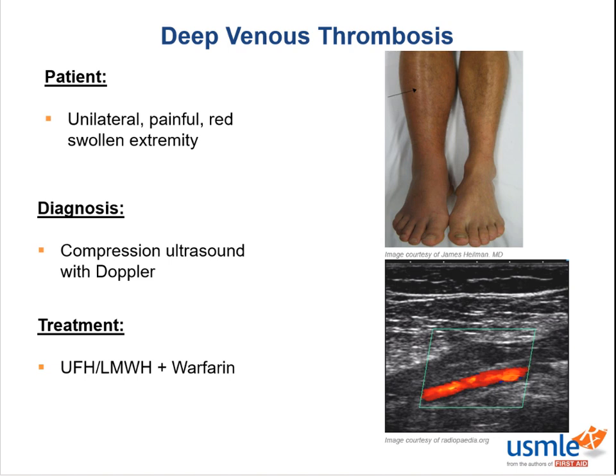Okay, but why do we need to treat DVT anyway? Well, sure, it can rarely be limb-threatening, but the main reason is because DVTs can cause life-threatening pulmonary emboli. The risk factors for PE and DVT are essentially the same, so you often hear them clumped together as venous thromboembolism, or VTE. That's all, folks. If you liked the video, please give it a thumbs up. Until next time, goodbye.